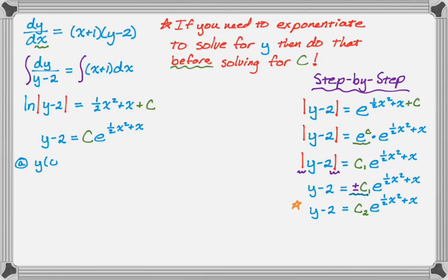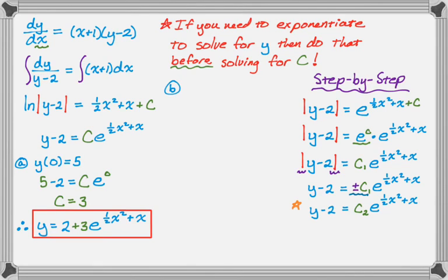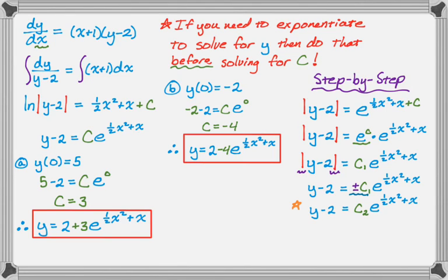With initial condition y(0) = 5: plug in y = 5 and x = 0. Since e to the 0 is 1, we get 5 − 2 = C, so C = 3. The solution is y = 2 + 3e to the (1/2 x squared + x). With a different initial condition y(0) = −2: plugging in gives −2 − 2 = C · 1, so C = −4, and the solution is y = 2 − 4e to the (1/2 x squared + x).